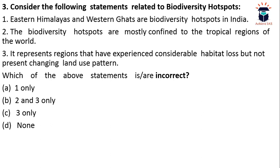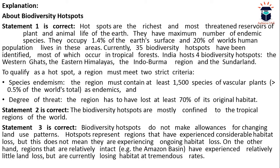Eastern Himalayas and Western Ghats are indeed biodiversity hotspots. Biodiversity hotspots are mostly confined to tropical regions, which is true. Statement three is also correct: biodiversity hotspots represent regions that have experienced considerable habitat loss, but this does not mean they are experiencing ongoing habitat loss. On the other hand, relatively intact regions like the Amazon basin have experienced little land loss but are currently losing habitat at tremendous rates.